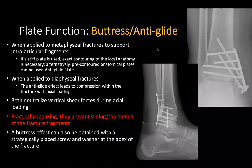Buttress or anti-glide plating is the second major plate category. When applied to a metaphyseal fracture to support intraarticular fragments, a stiff plate contoured to local anatomy prevents bone from moving — creating a buttress construct that maintains primary intraarticular fixation. Frequent contoured anatomy plates can also serve as anti-glide plates.